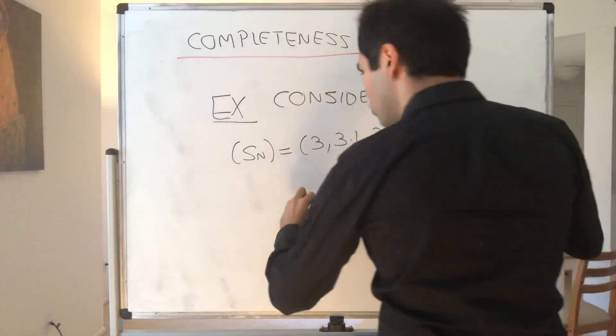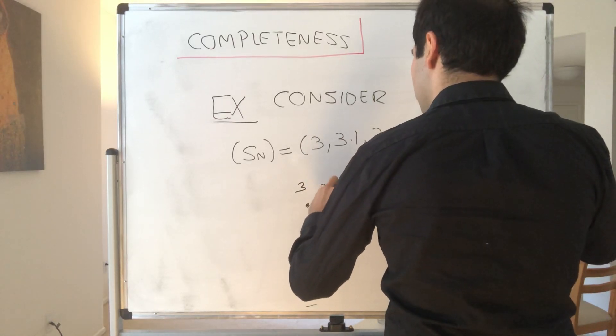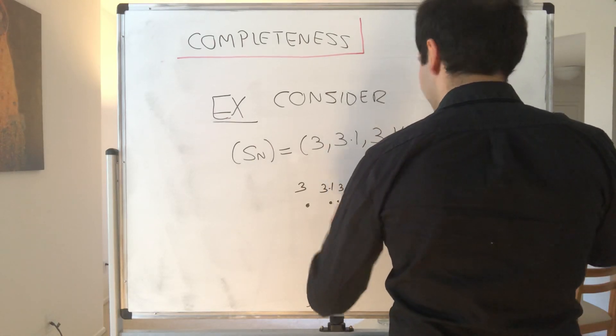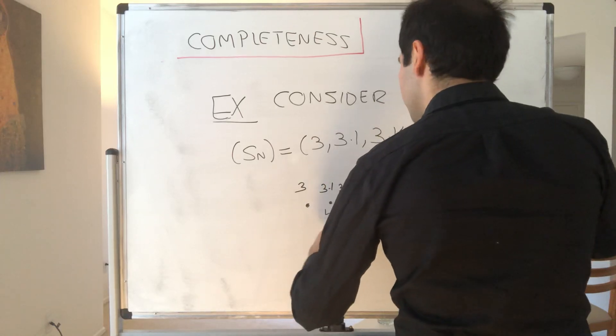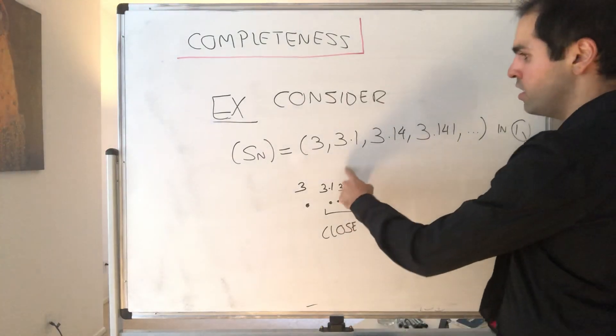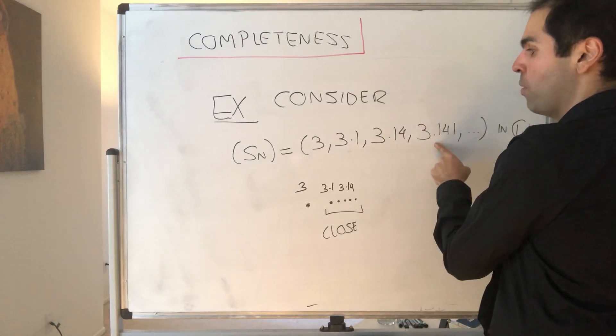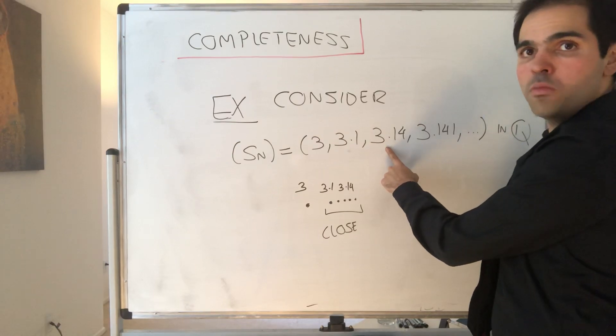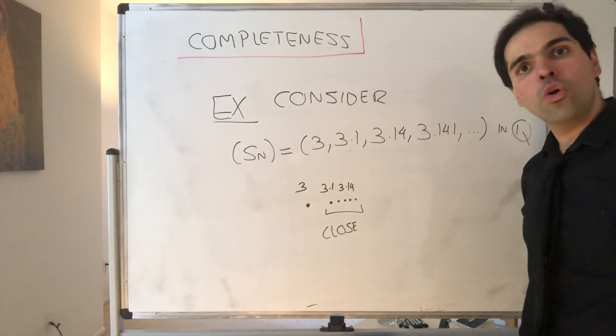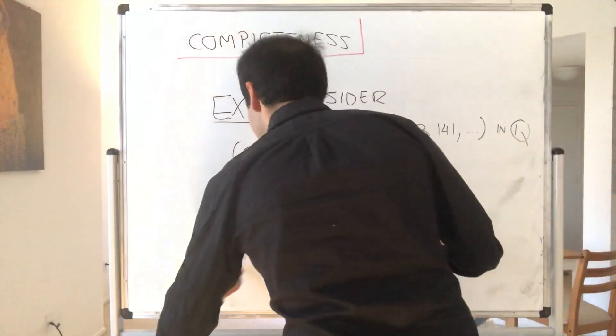Now notice, the terms of the sequence actually do get closer and closer to each other. Because this is 3, 3.14, 3.141, etc. You can also show that this is true, because after this value, all the terms are at most 0.1 apart. After this term, all the terms are 0.01 apart. So in the long run, the terms become arbitrarily close to each other. Therefore, Sn is actually Cauchy.